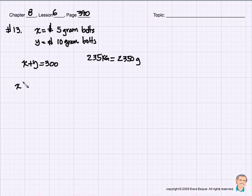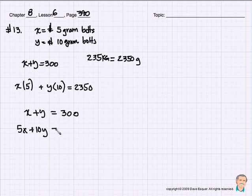So we've got x bolts times the 5 grams plus y bolts times the 10 grams is going to be 2,350 grams. So we've got the total number of bolts is 300. We've got 5 times the number of x's plus 10 times the number of y is 2,350. So let's rewrite these. We have x plus y is equal to 300. We have 5x plus 10y is equal to 2,350.